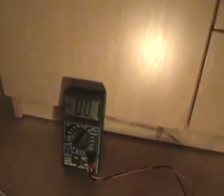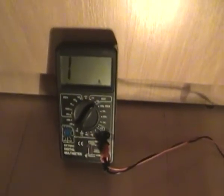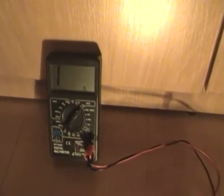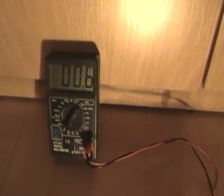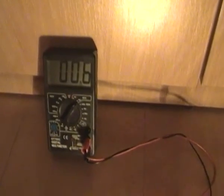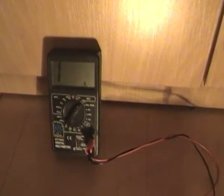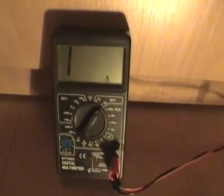The multimeter connected to the load shows us nothing. One time it's zero, one time it's overload. Sometimes it's minus one volts AC.